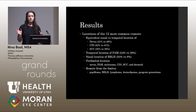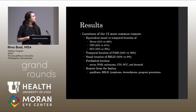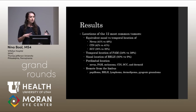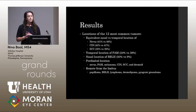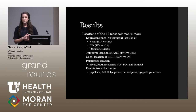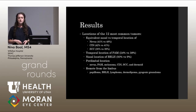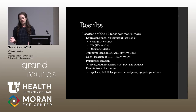Looking at the 12 most common tumors by location, there's a clear pattern. Nevi, CIN, and SCC show equivalent nasal versus temporal distribution. PAM tends to be more temporally located, while BRLH tends to be more nasal. Along the limbus, you're more likely to see nevi, PAM, melanoma, CIN, SCC, and dermoid tumors. More remote from the limbus, you'll see tumors like papilloma, lymphoma, BRLH, dermal lipoma, and pyogenic granuloma.